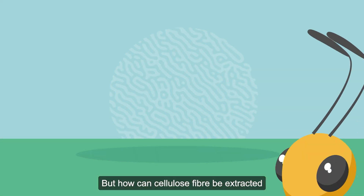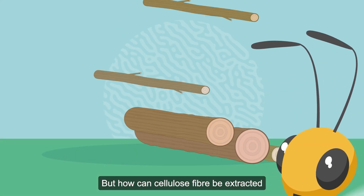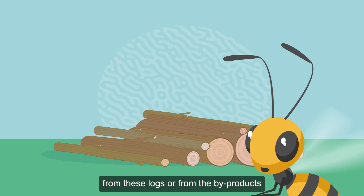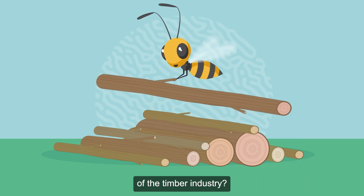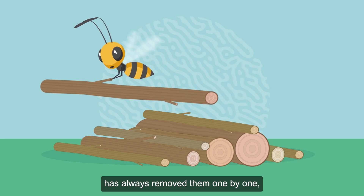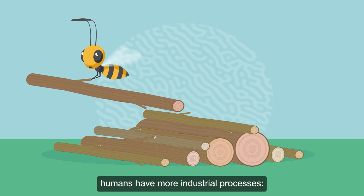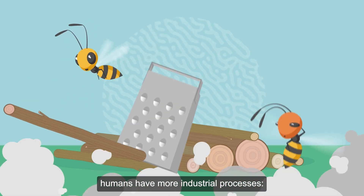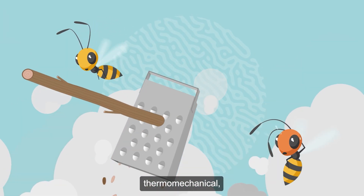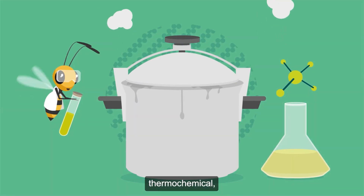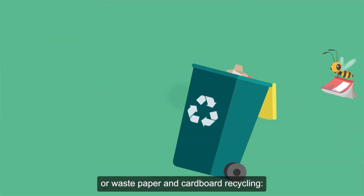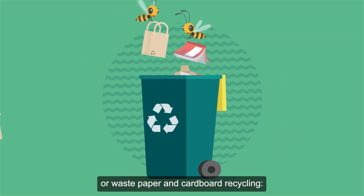But how can cellulose fiber be extracted from these logs or from the byproducts of the timber industry? While the little paper wasp has always removed them one by one, humans have more industrial processes: thermo-mechanical, thermochemical, or waste paper and cardboard recycling.